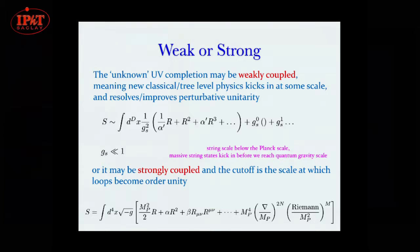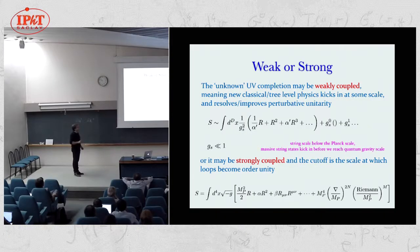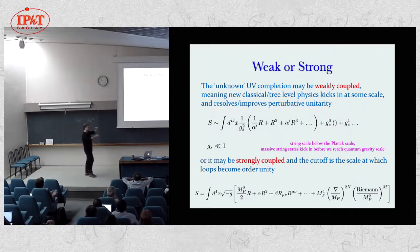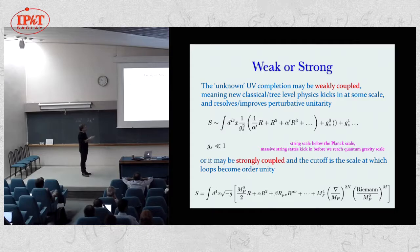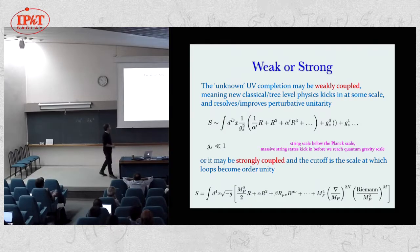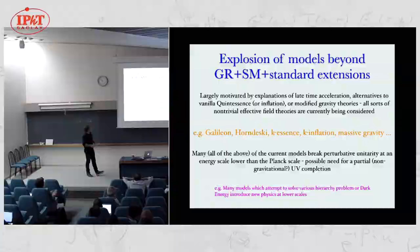There are typically two scenarios where the UV completion is weakly coupled or strongly coupled. If it's weakly coupled, new physics can come in below the Planck scale — for example, that's what occurs in weakly coupled string theory, where new states come in at the string scale and modify the high energy behavior of tree level scattering amplitudes, resolving the problems with perturbative unitarity. Or it could be strongly coupled, where nothing happens until you hit the Planck scale and then all quantum corrections are order one.